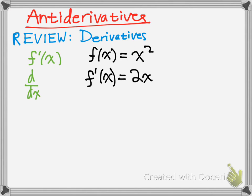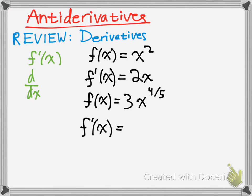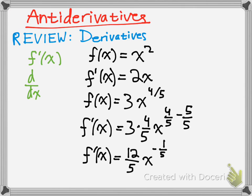Let's try a little bit more difficult one for review. f of x is 3x to the 4/5 power. The derivative would be, using the same rule: 3 times 4/5, x to the 4/5 minus 1, which would be negative 1/5. So your answer would be 12/5 x to the negative 1/5 power.